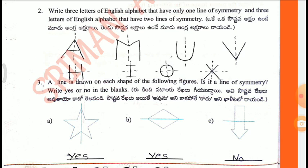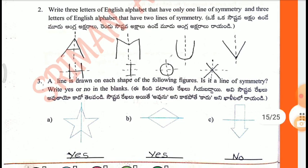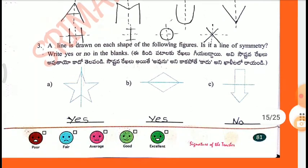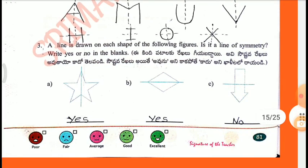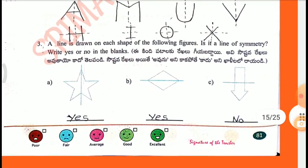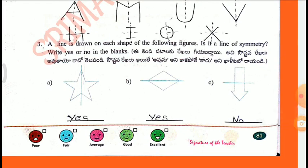Third one: A line is drawn on each shape in the following figures. Is it a line of symmetry? Write yes or no. First one is a line of symmetry — yes. Second one is a line of symmetry — yes. Third one is not a line of symmetry — no.